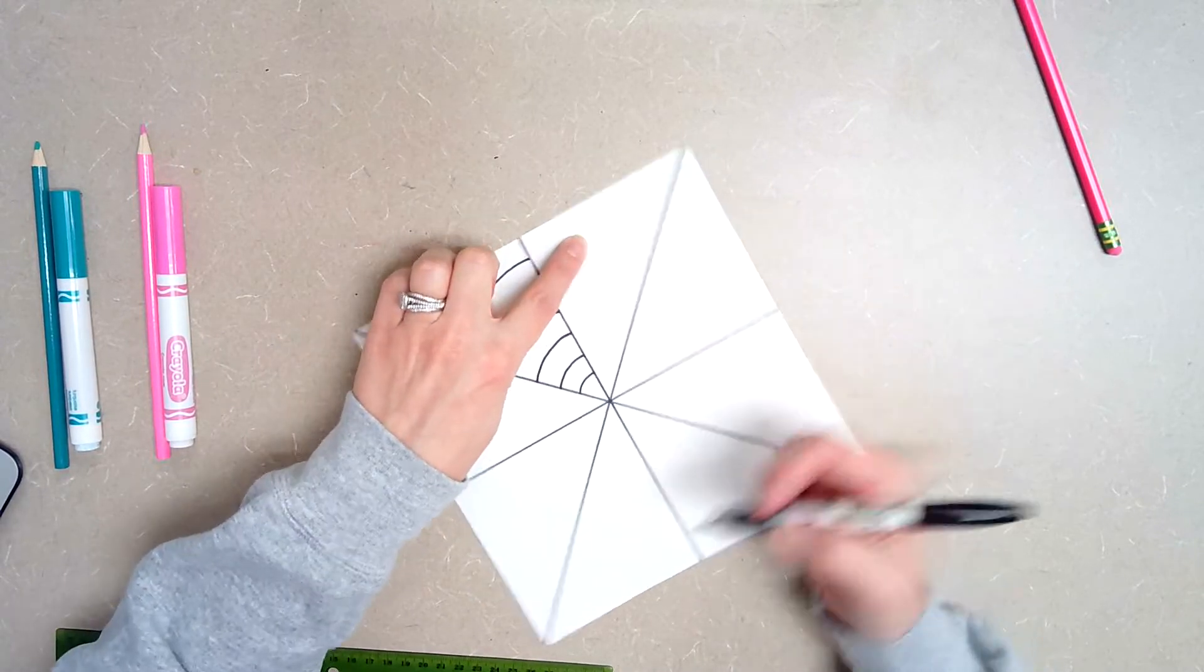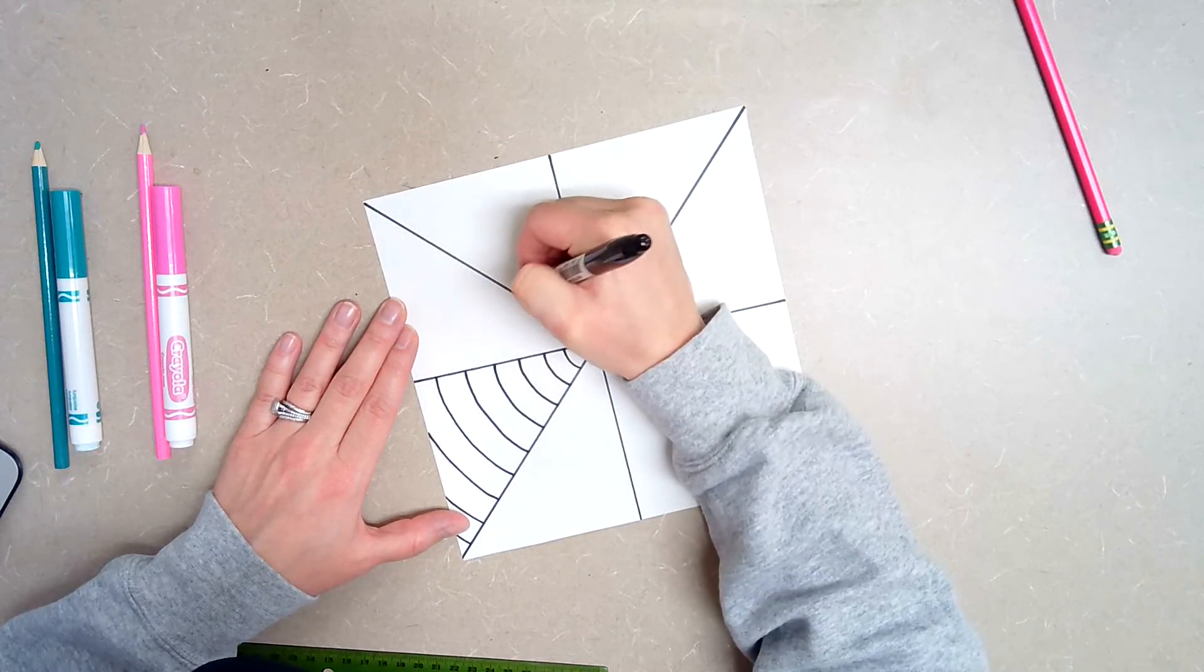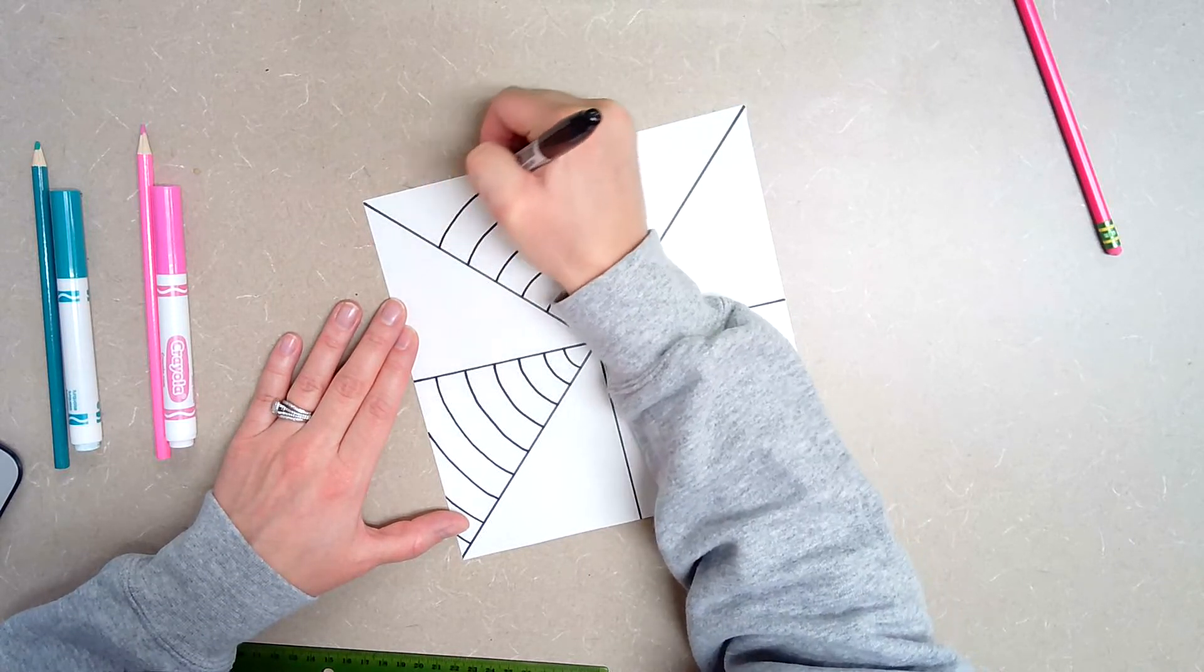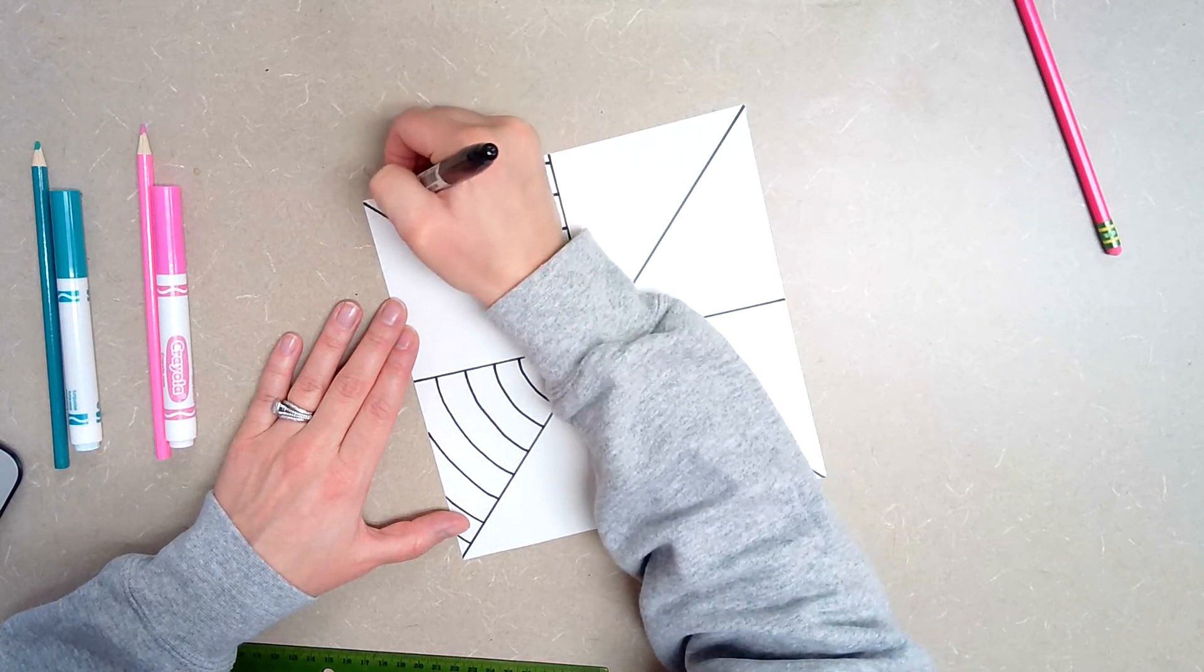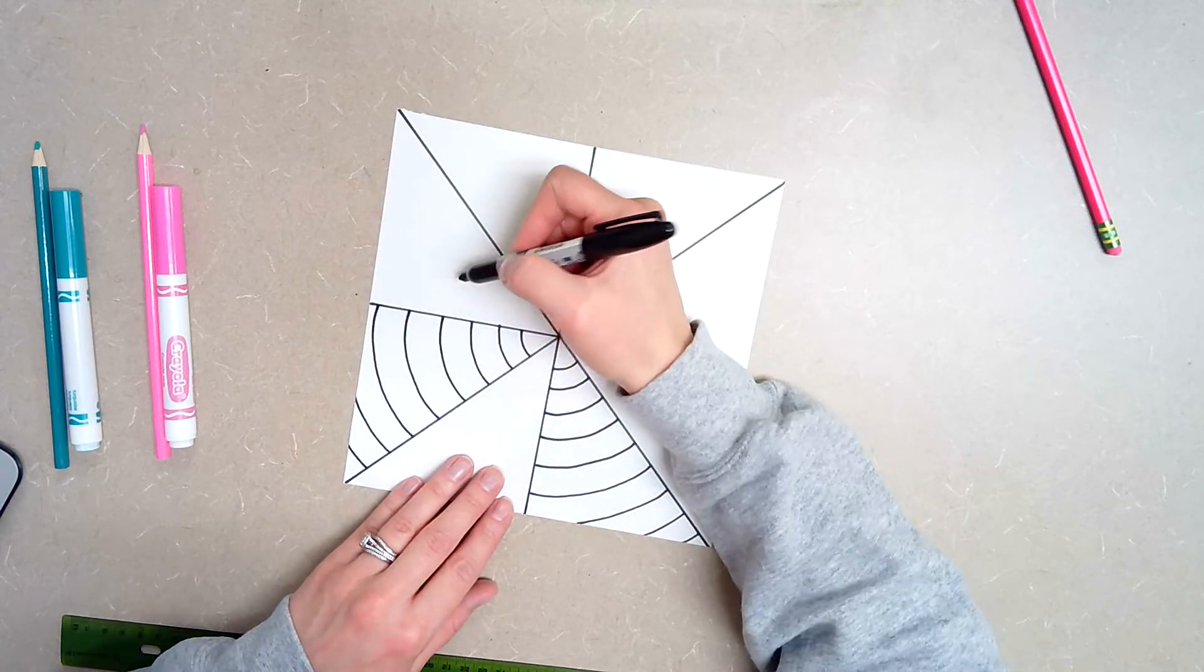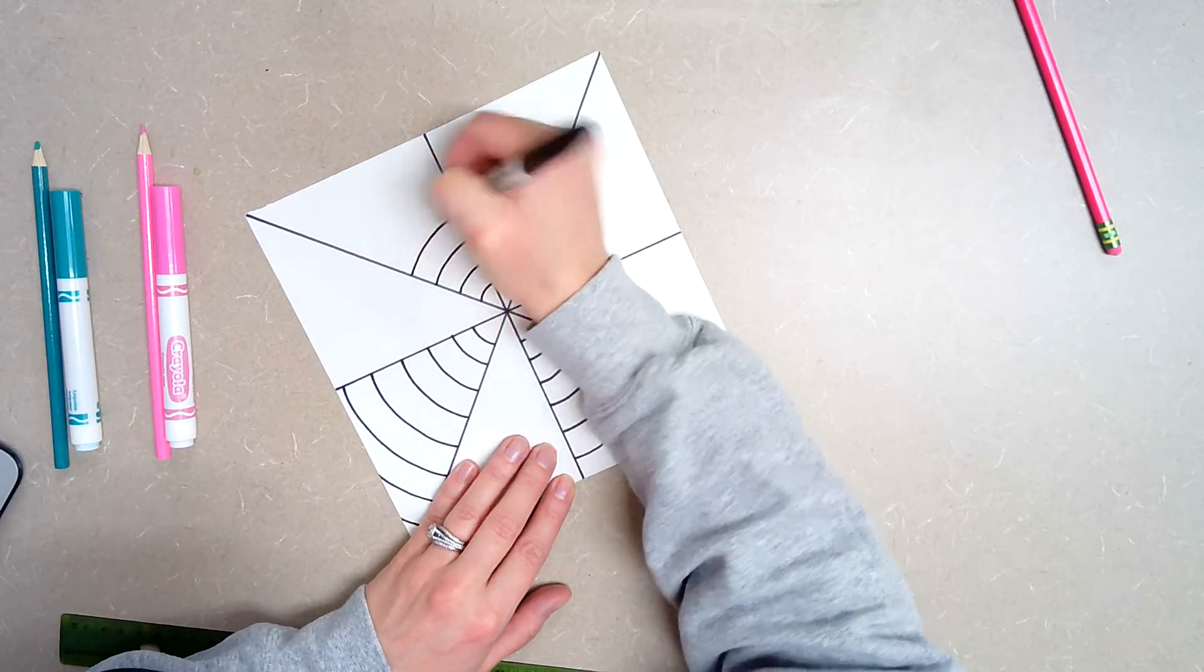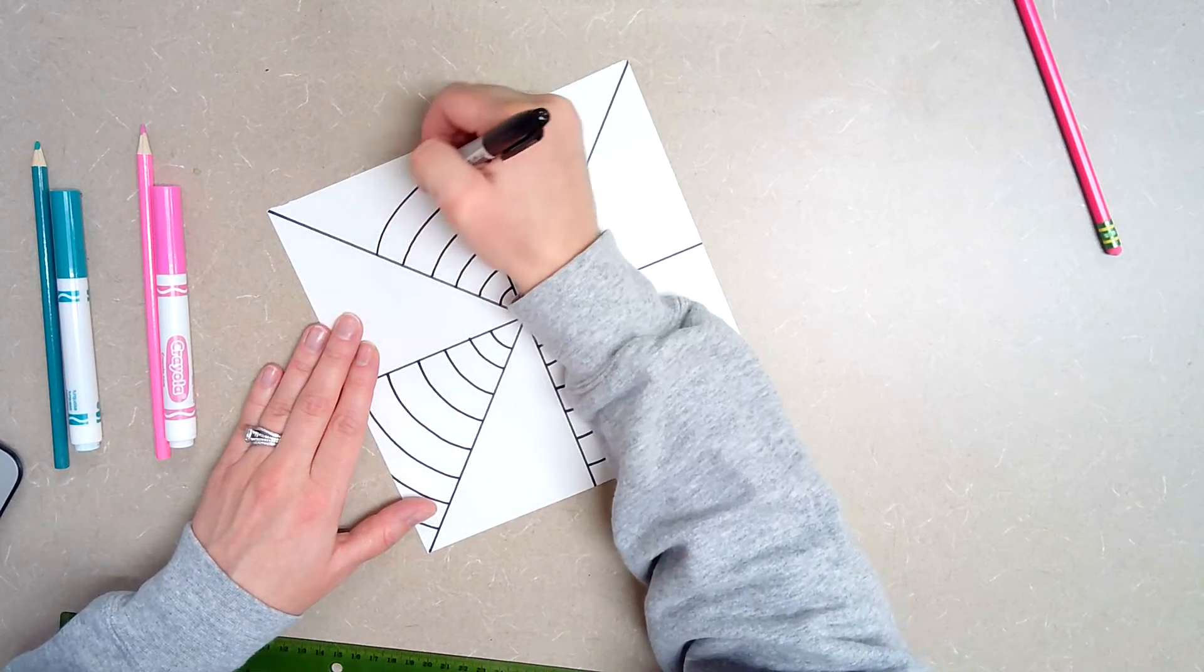And then I'm going to skip a pie piece and then go to my next one. Now this is one of those projects where you have to go really, really slow. Because if you don't, you could very easily make a mistake and then draw right next to it. And that's not what you want to do. You want to skip one in between. So just go slow. Take your time.